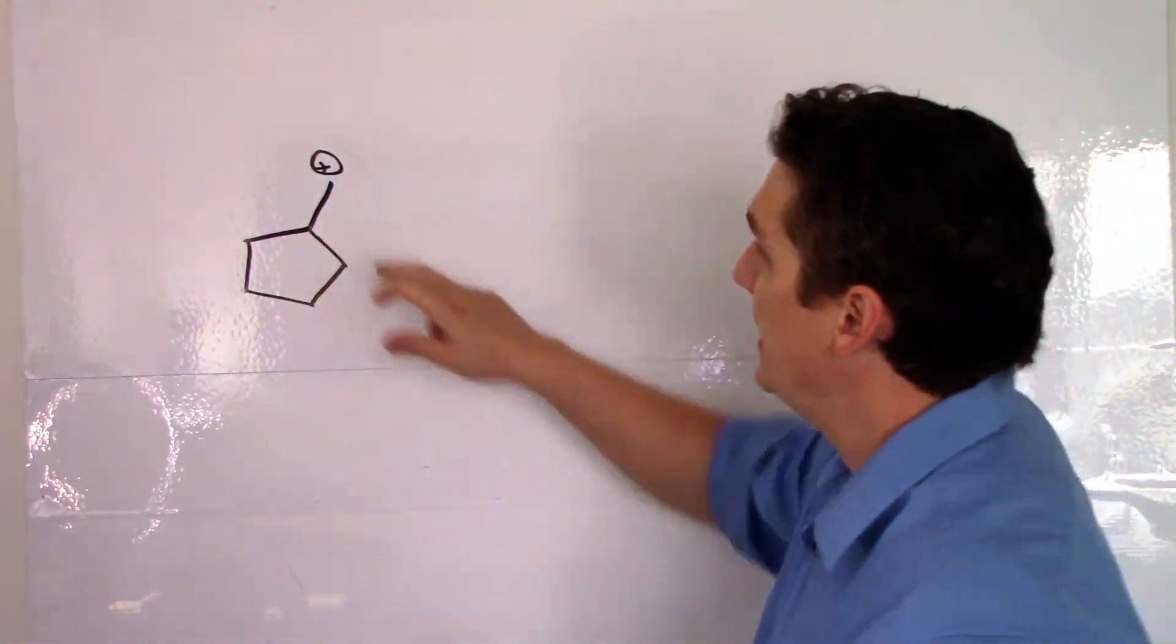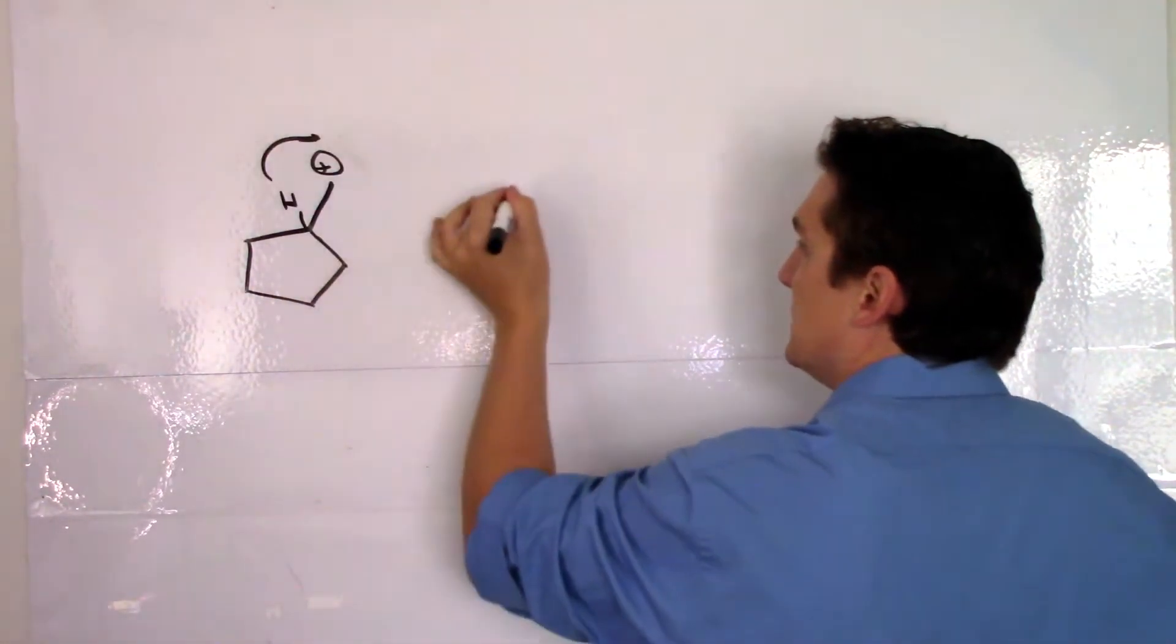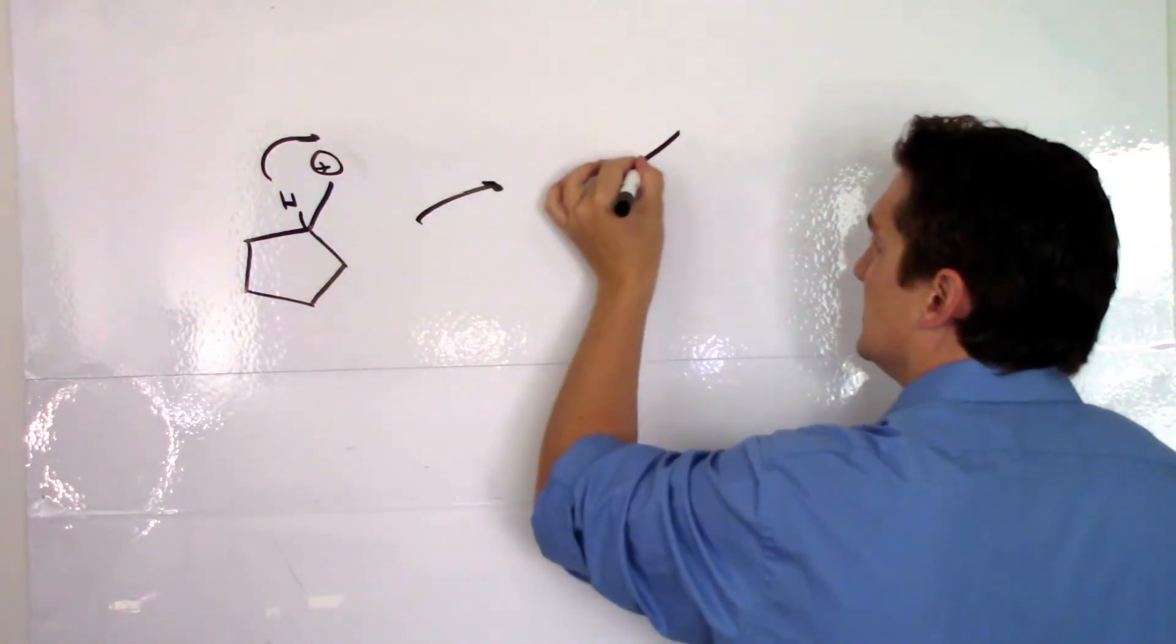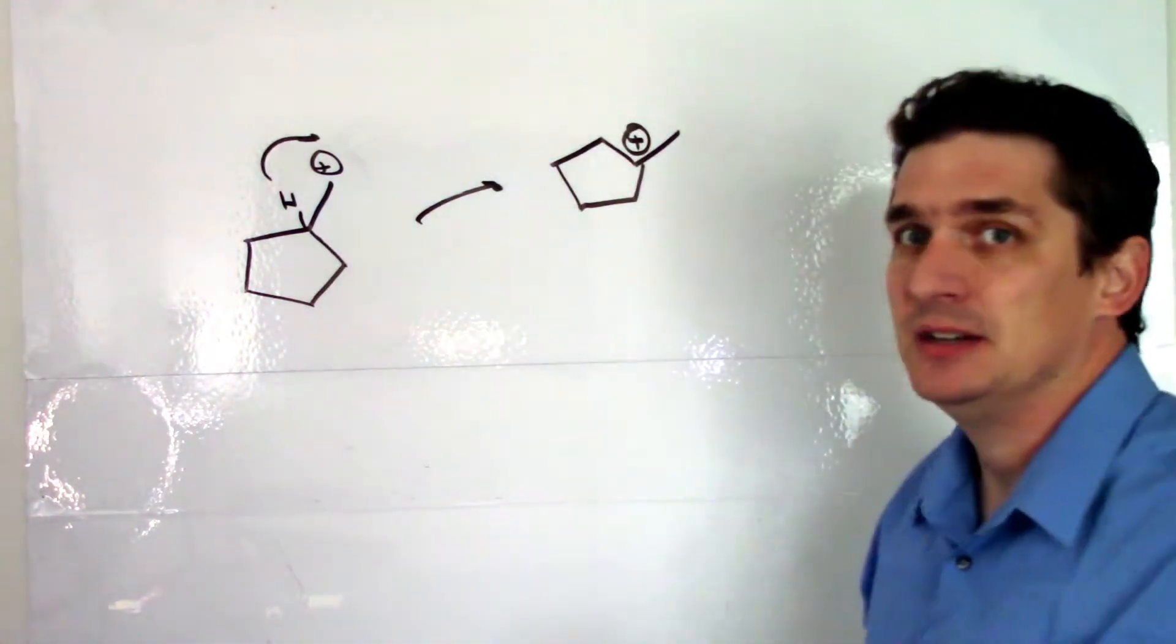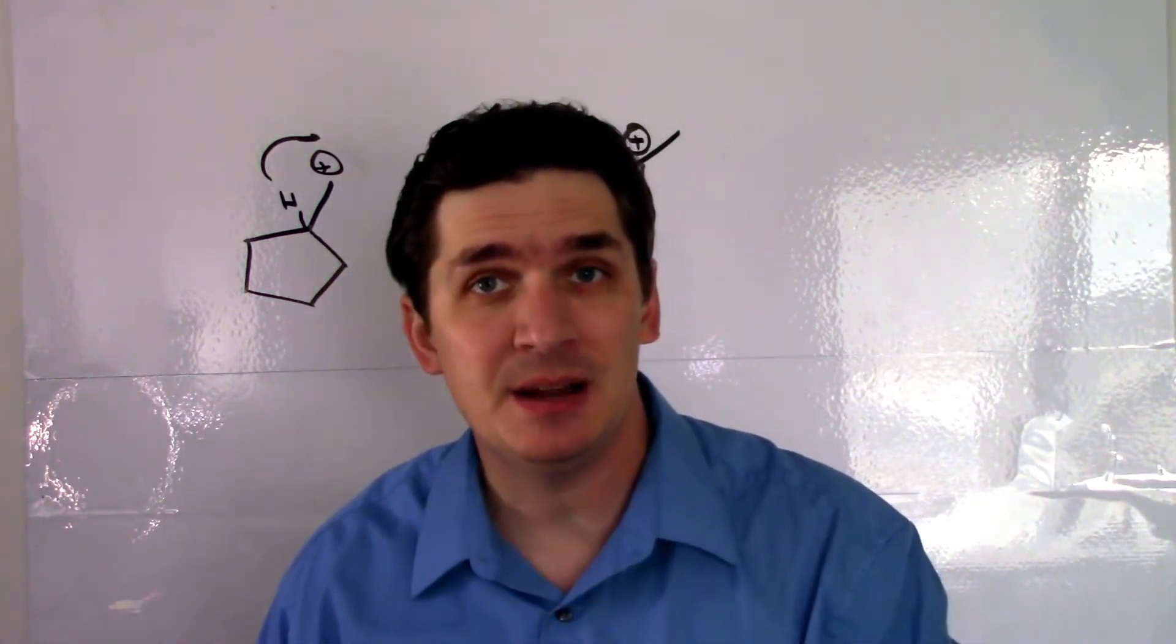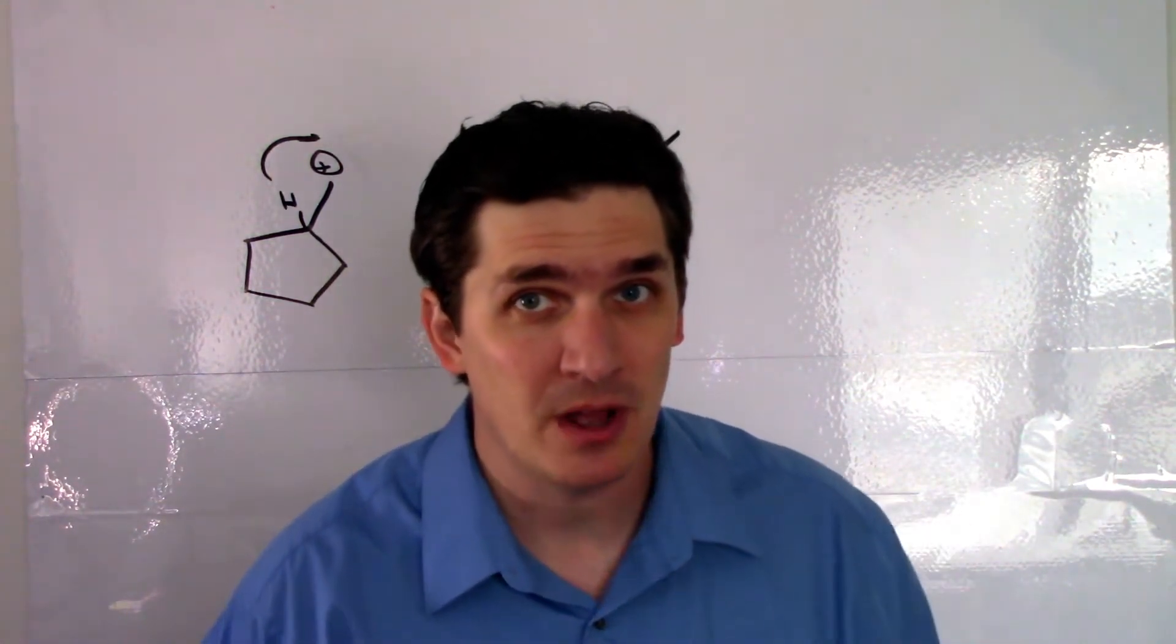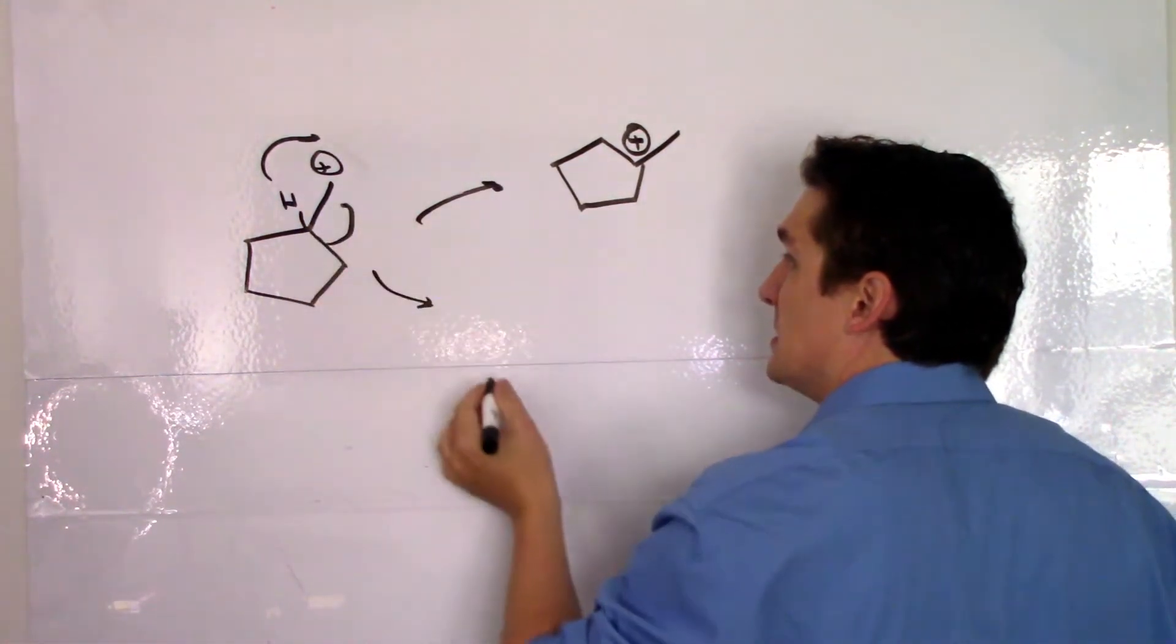So in this case I have two options. I can shift the hydrogen, and if I shift the hydrogen I will get this compound here. Now this would kinetically be very fast, but thermodynamically it's not the most favorable product. What would be more favorable here is to shift this up.